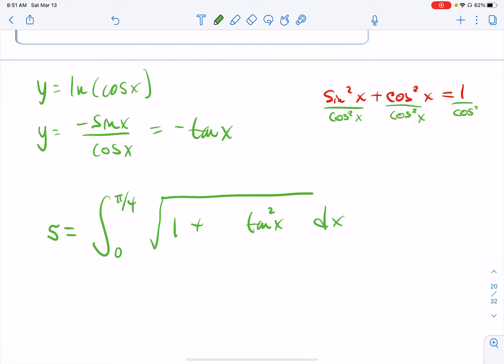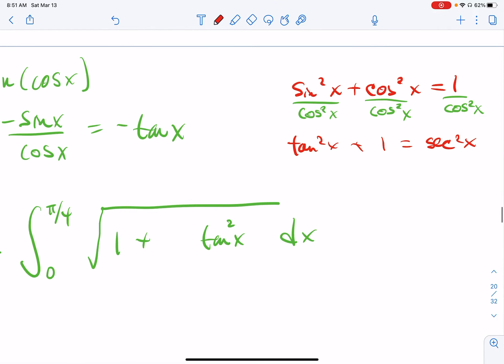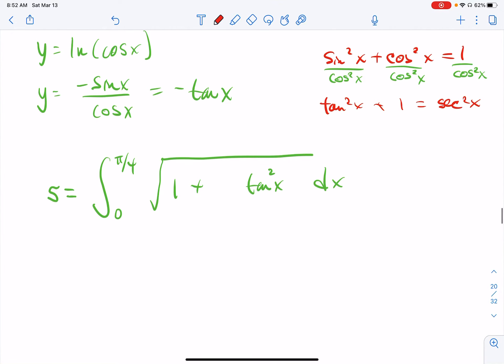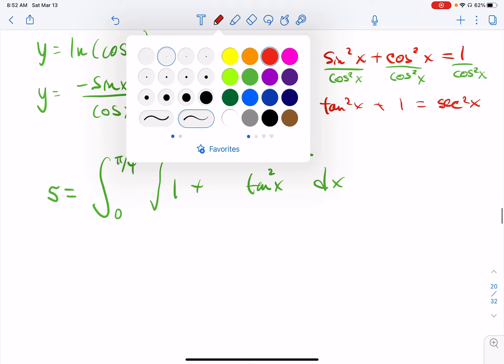on the left-hand side, I have tan squared x plus one is equal to one over cosine, which is secant squared x. So I will replace one plus tangent squared with secant squared. And I did that because then the square and the square root are going to cancel. How convenient.